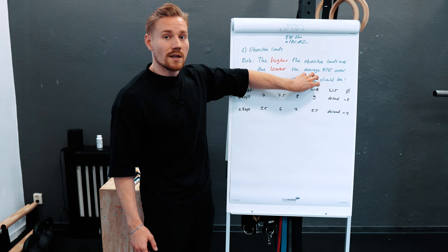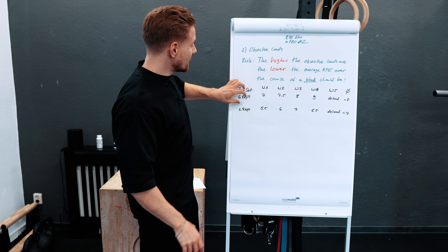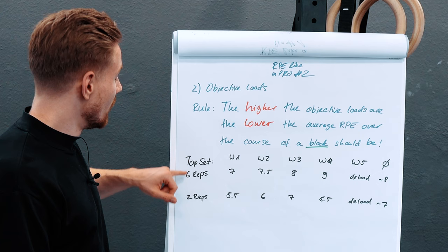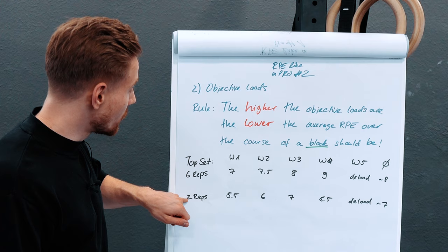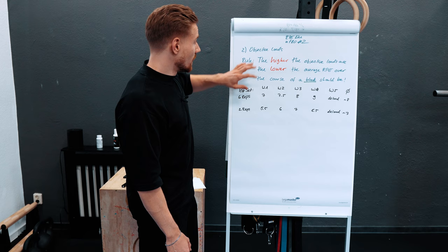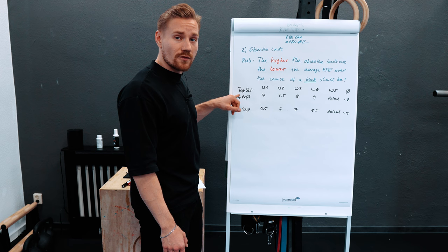For the upcoming example we use a block length of five weeks, though this can differ for you. Let's look at two different objective loads using the dip example. Example one has a top set of six repetitions; example two has a top set of two repetitions. With two reps you have a much higher objective load — there's simply more weight on the belt. Applying rule number two: with six reps we can have a higher RPE average over the block versus two reps.